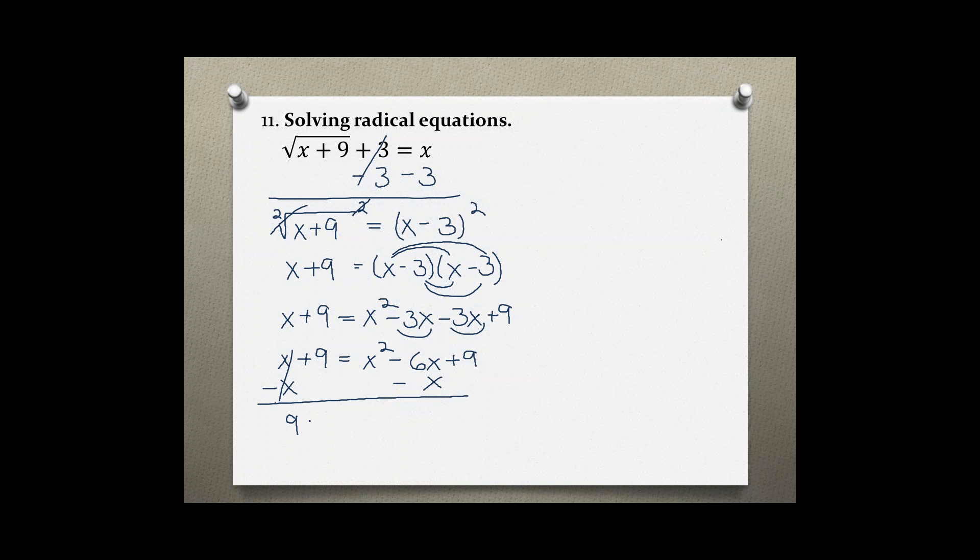This gives me 9 equals x squared minus 7x plus 9, and then subtracting 9 from both sides. Now we have on the left side 0, and that is equal to x squared minus 7x, and that cancels out.